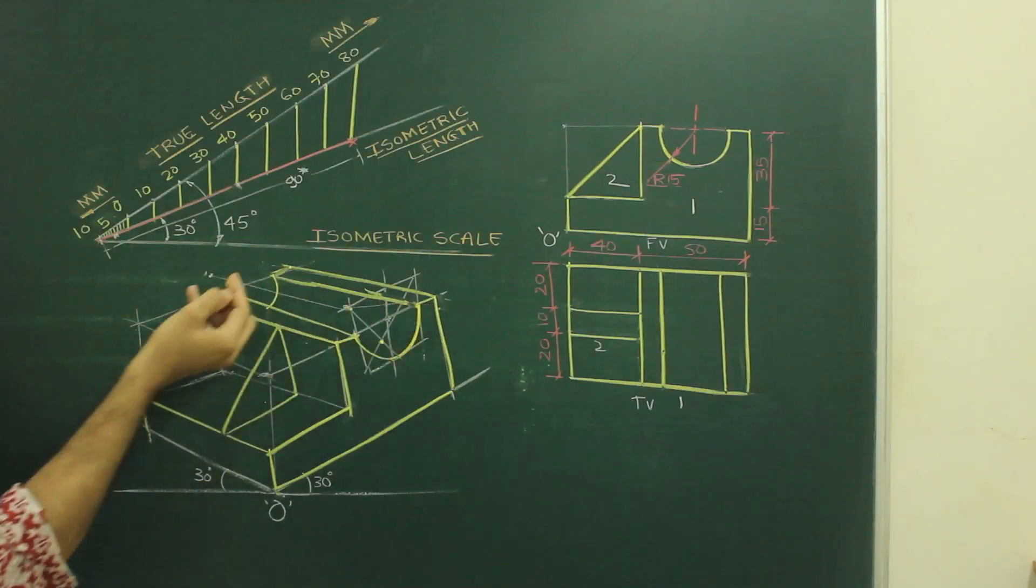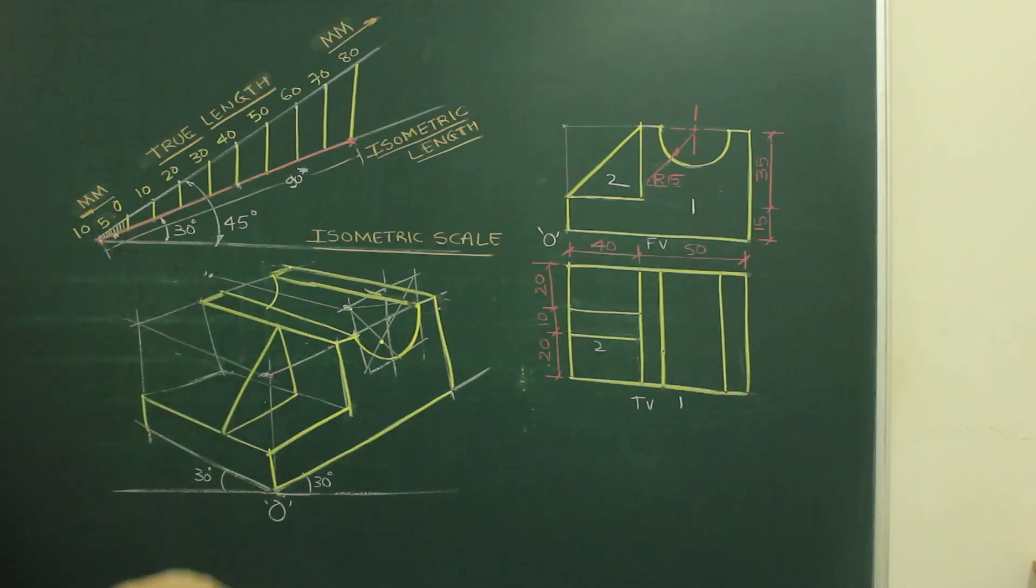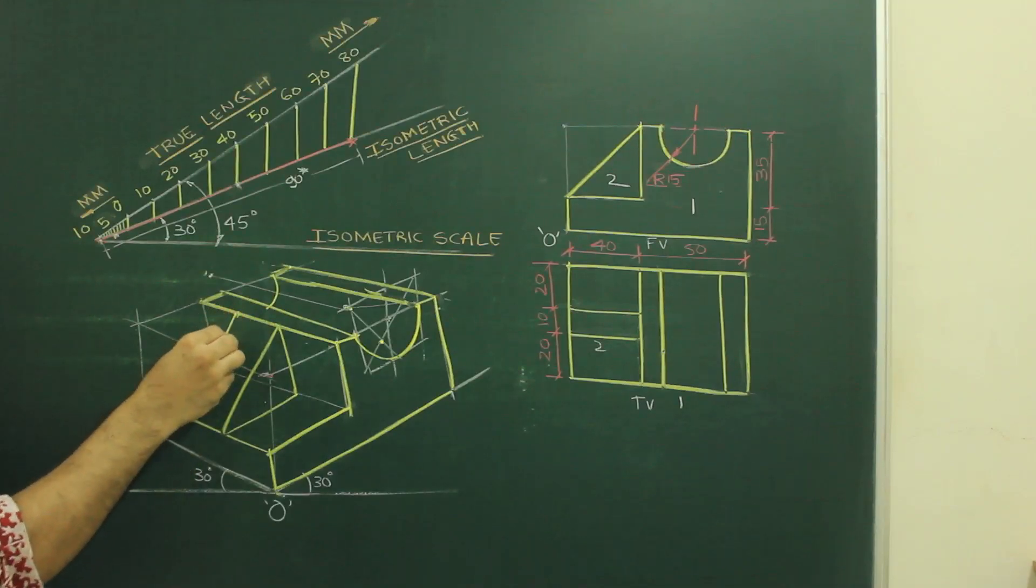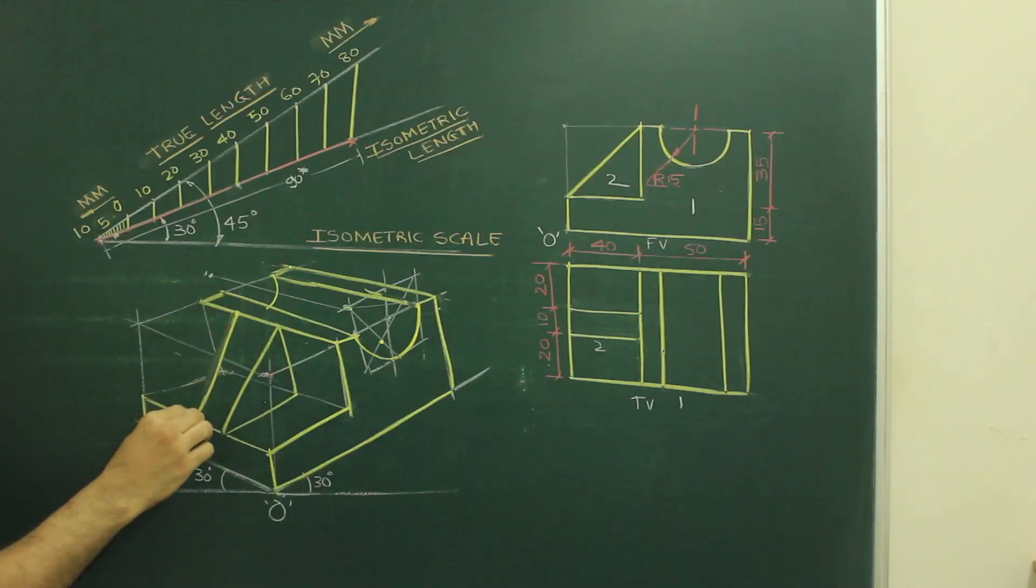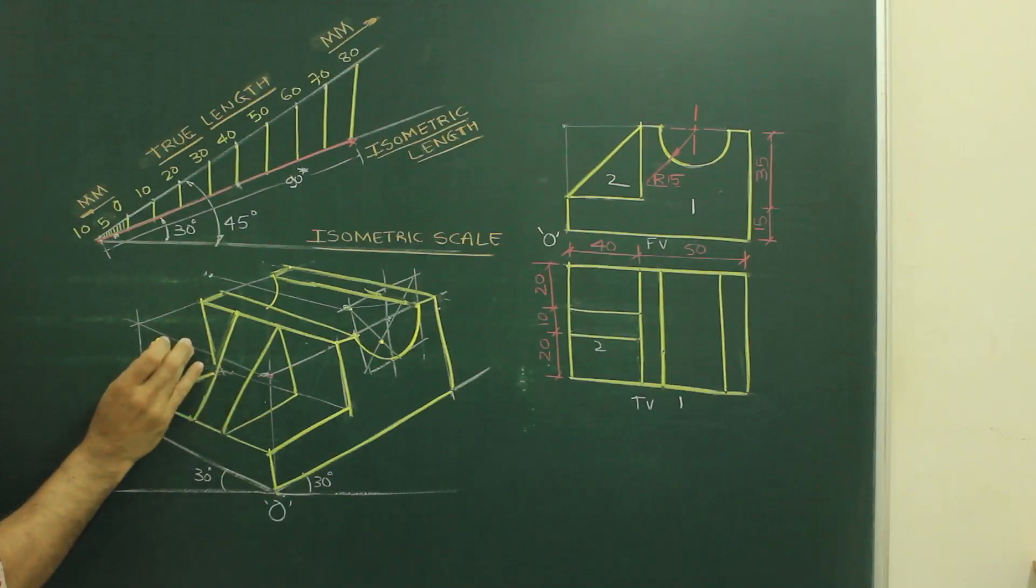After that, 10. Again I can take 10 from here. See always remember, we have to take isometric length. So take this 10 star. Cut on this side. This side. And join. And then you can draw the behind portion as well. This would be done.